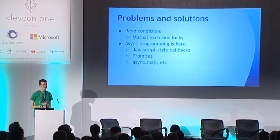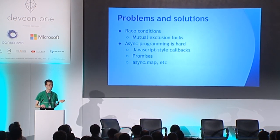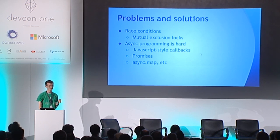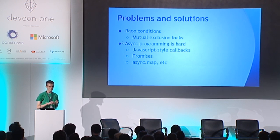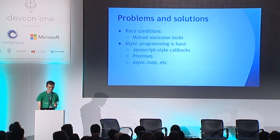Once you get into asynchronous programming — as everyone who has done it will know — you run into race conditions, you have to think about mutual exclusion issues, and even without that, JavaScript callback towers look ugly and are annoying. You might want to think about promises and things like async map — programming paradigms that make this kind of stuff easier.